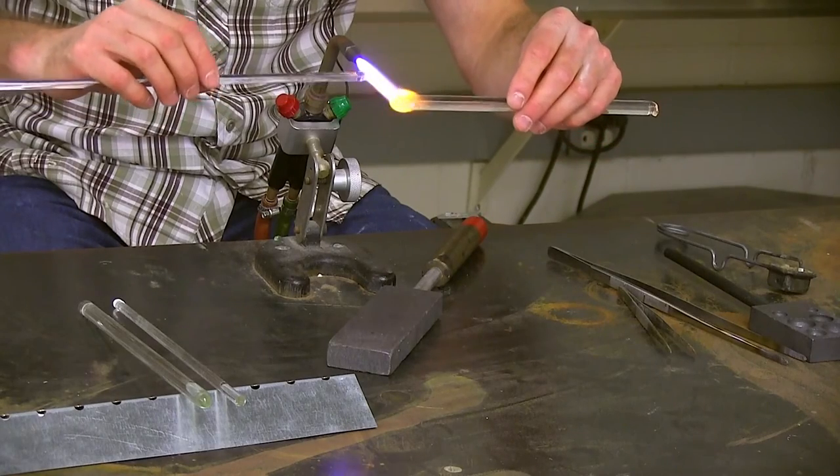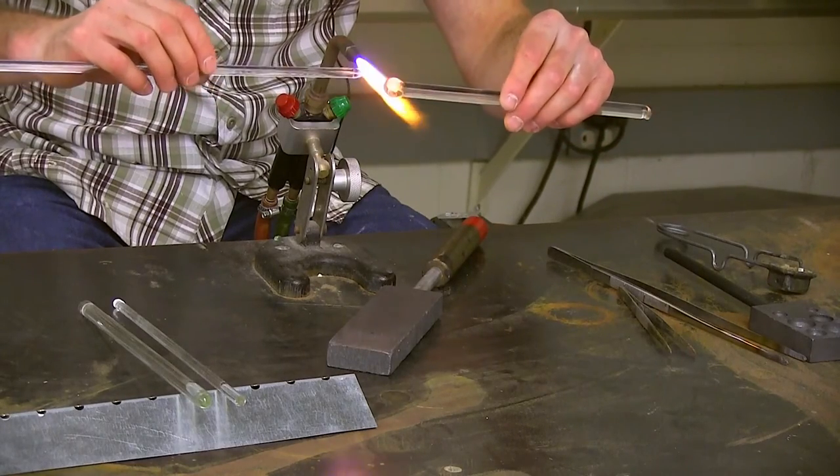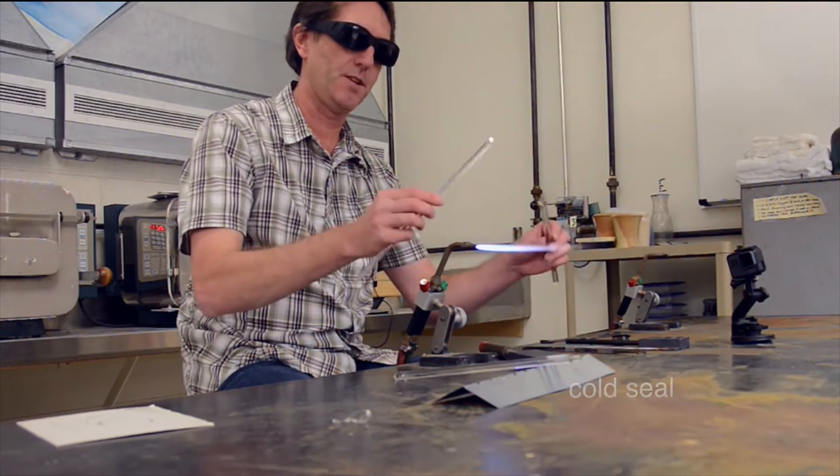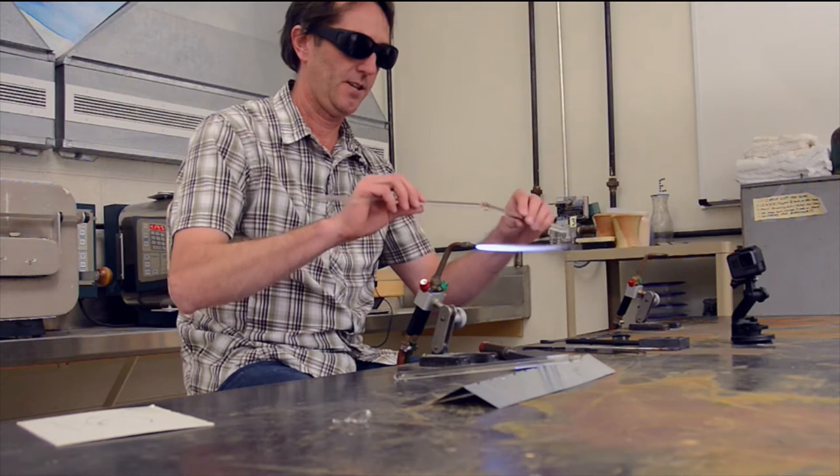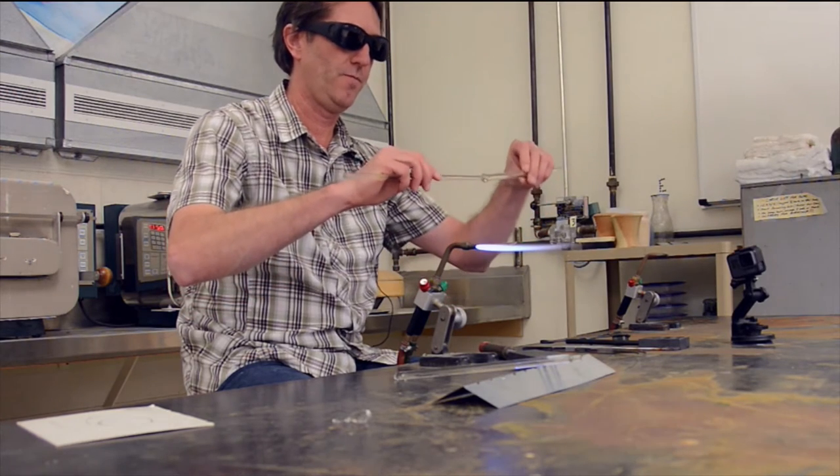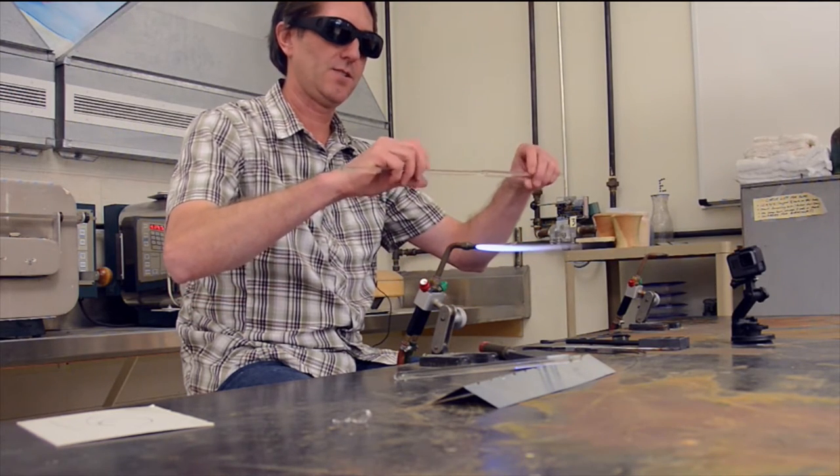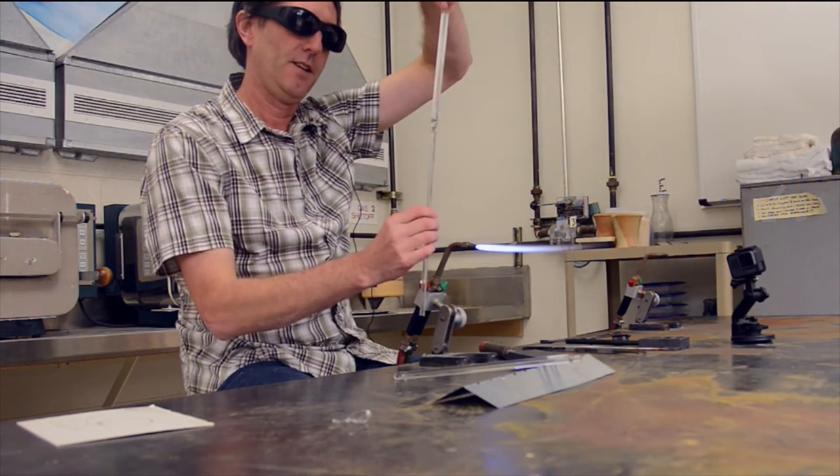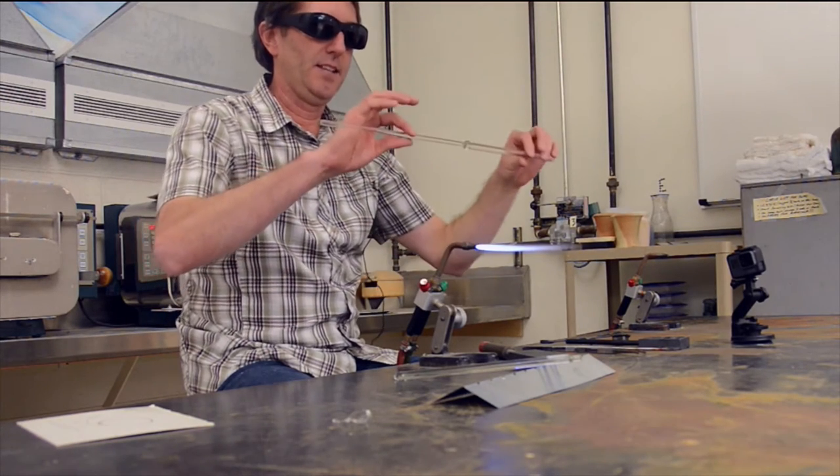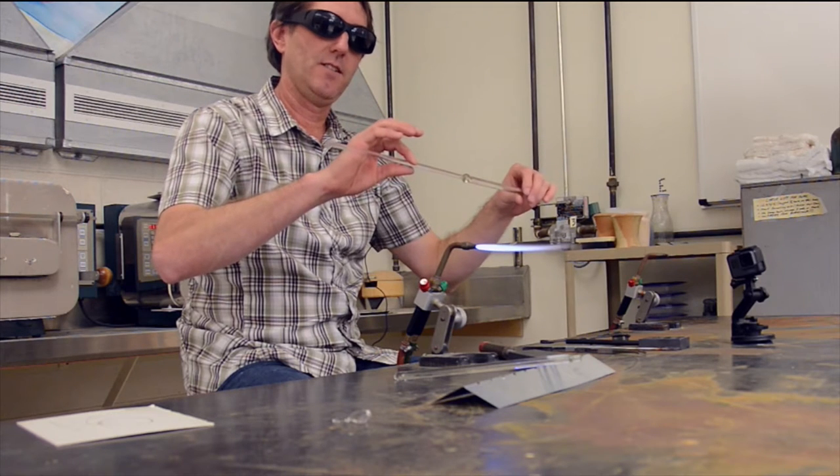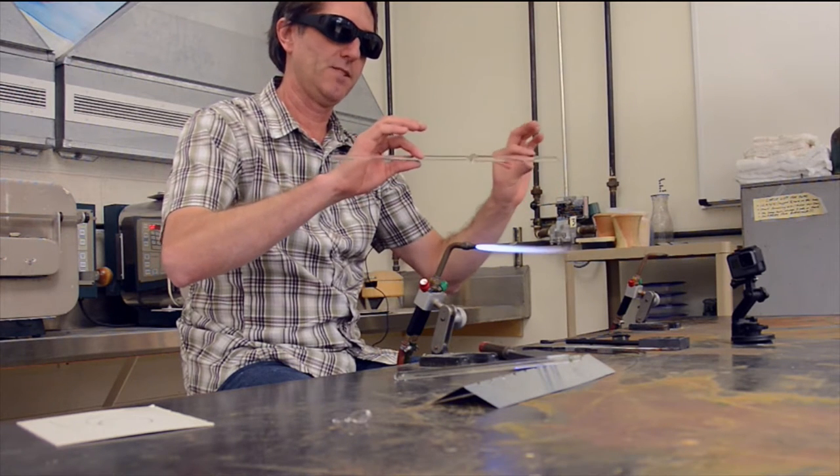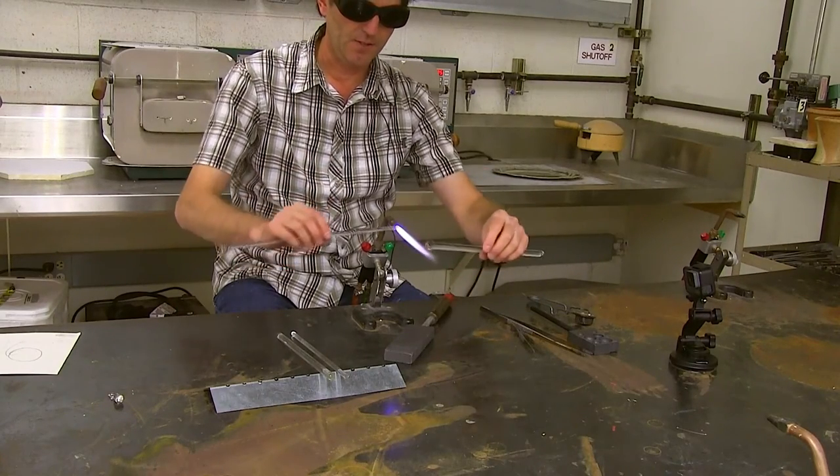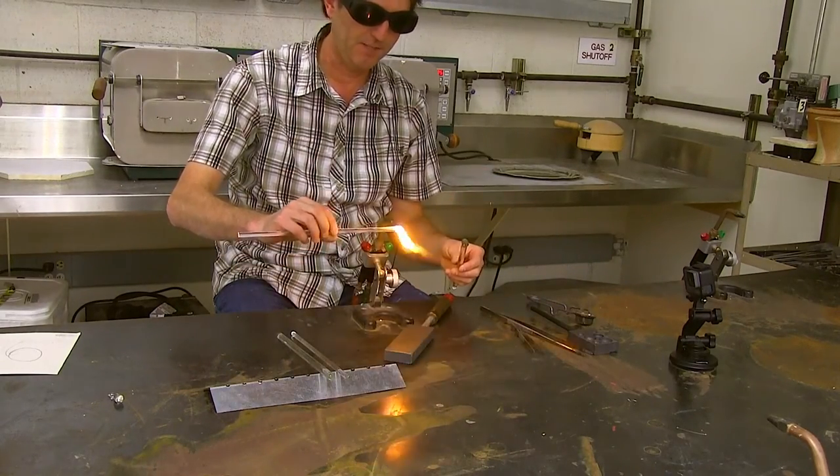I'm going to get it warm. It's going to be what we call a cold seal. My item I'm working on is going to be colder than my punty, which is white hot. I touch it to the tip, push and pull, and line it up so that it's uniform. The nice thing about a cold seal like this, where one item is colder and one item is hotter, is that it breaks off nice and clean.